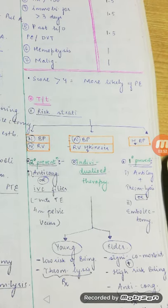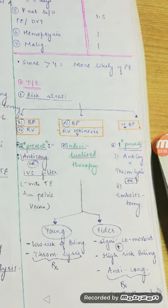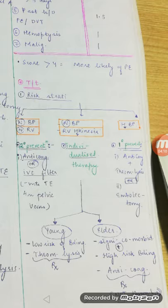Moving to treatment — we need to do risk stratification based on BP and right ventricular activity. If BP is normal and there are no signs of right ventricular strain — no right bundle branch block, no right axis deviation on ECG, no right ventricular wall hypokinesia on 2D echo — the right ventricle is intact.